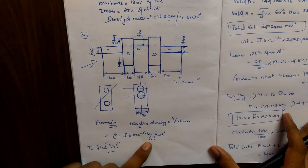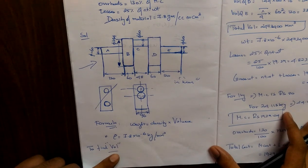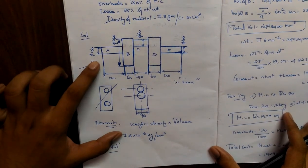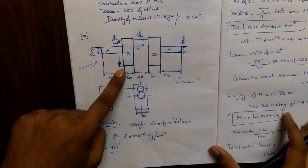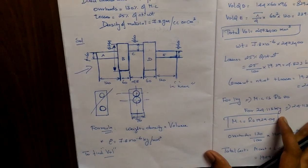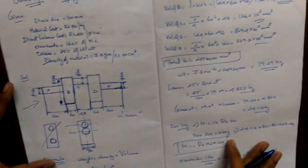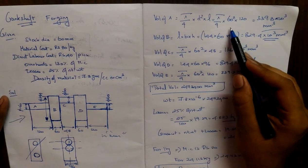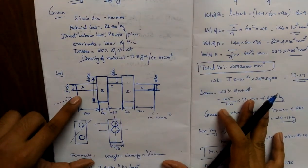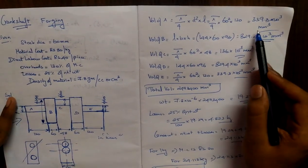Density is 7.8 grams per cm³, which means kg per mm³. To find the volume: for a cylindrical part the formula is π/4 × d² × l; for a rectangular part it is length × breadth × height. The parts are labeled A, B, C, D, E. Volume of A: π/4 × d² × l = π/4 × 60² × 120, giving the answer in mm³.